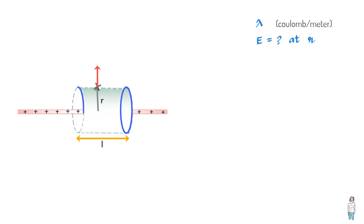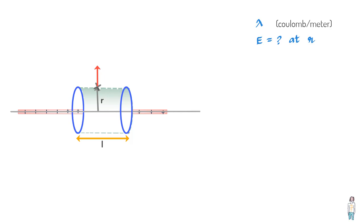We observe that the ends of the cylinder are perpendicular to the length of the wire, and the electric field is parallel to the ends of the cylinder — that is, the field is skimming the ends. Hence the dot product of E and the area vector of the end caps is zero, and therefore the flux through these ends is also zero. But on the curved surface of the cylinder, the electric field is perpendicular to the surface at every point.